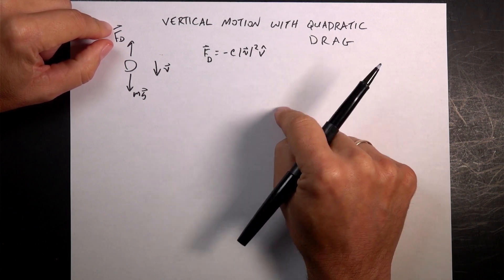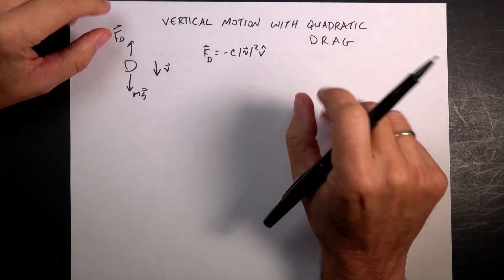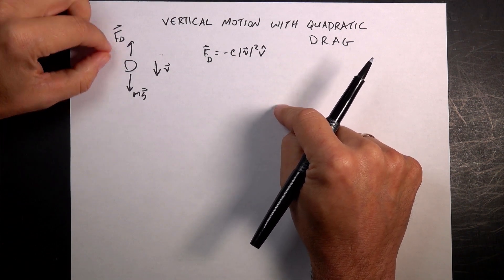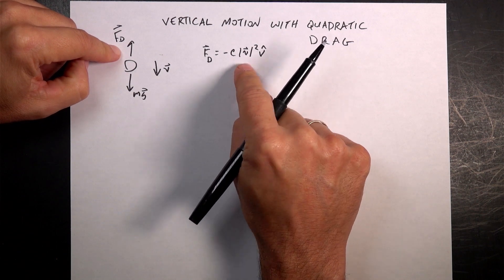And I did quadratic drag with no gravity, so an object moving horizontal, don't worry about the gravity. And now we're going to do quadratic drag in the vertical direction. So a falling object with a drag force that depends on the velocity squared. That's what I call quadratic drag.